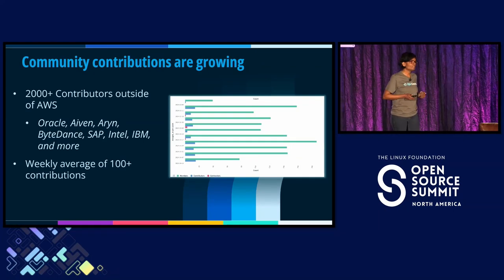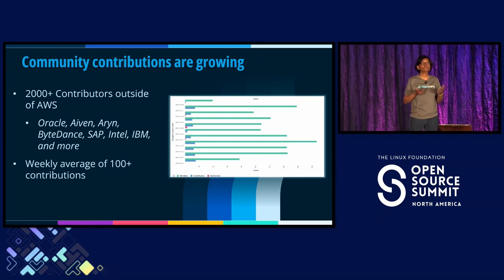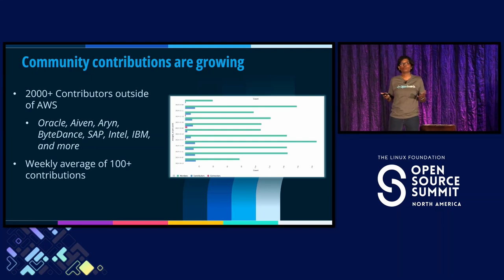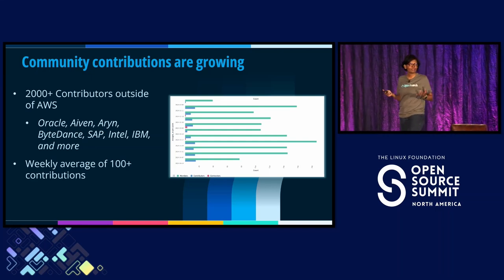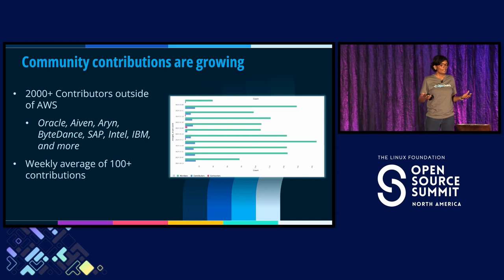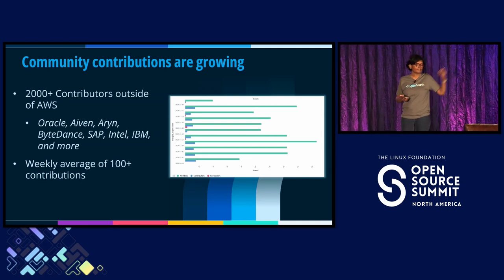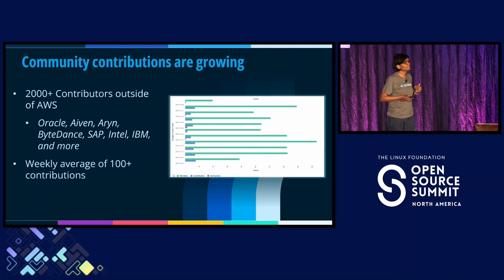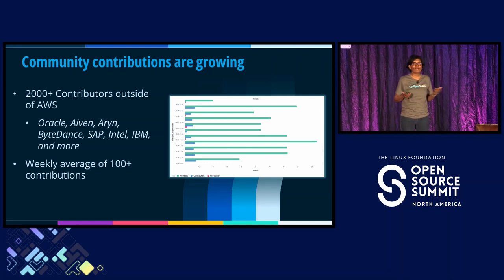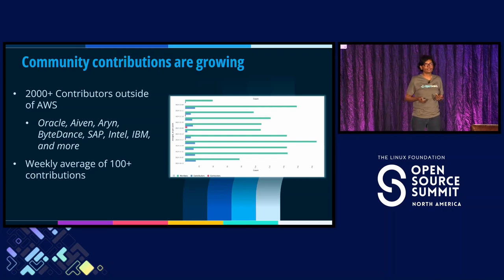We are very delighted about this growth, and at the heart of it is our community. Contributions are growing — we have over 2,000 contributors outside of Amazon. Notably, we have maintainers at Oracle, Aryn, ByteDance, SAP, and more, and we average about 100-plus contributions per month.